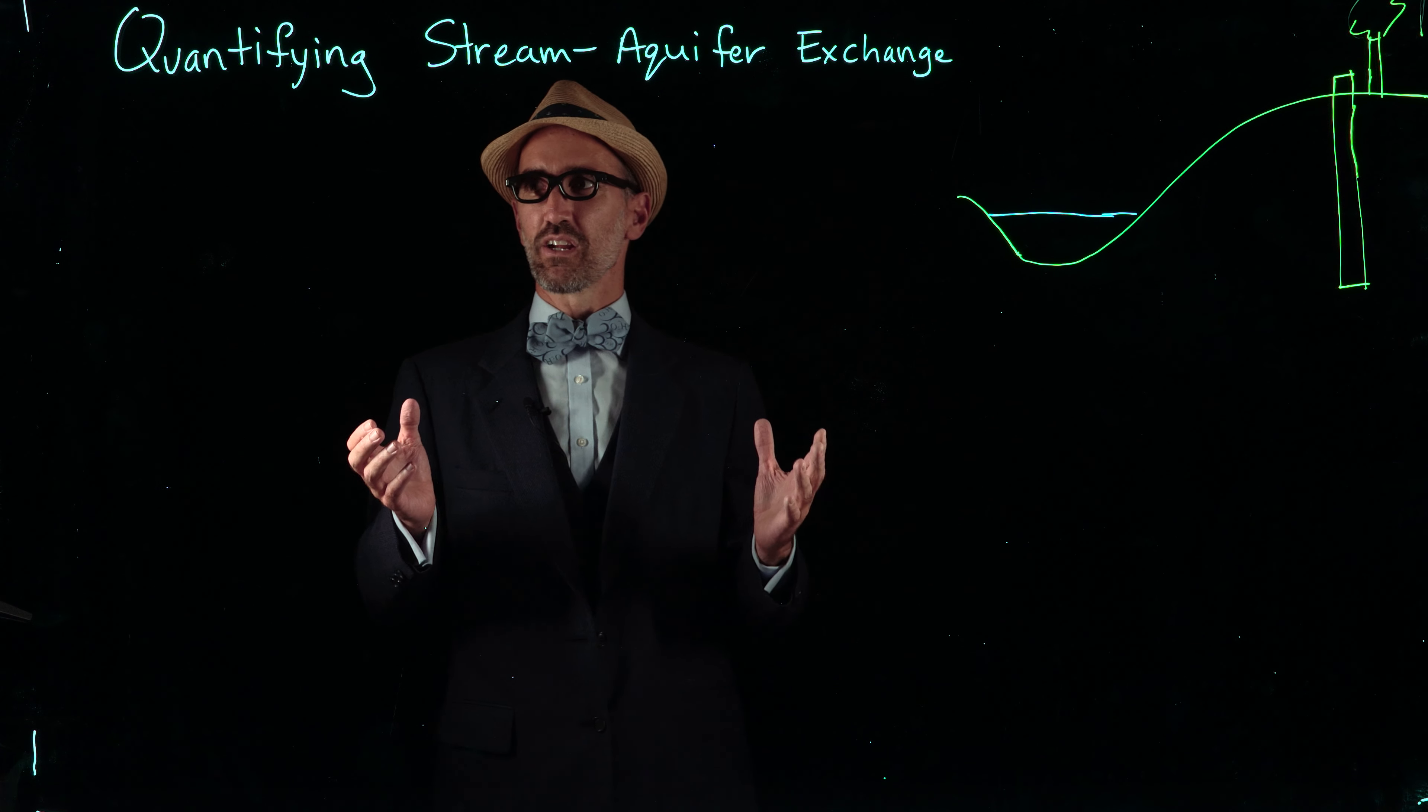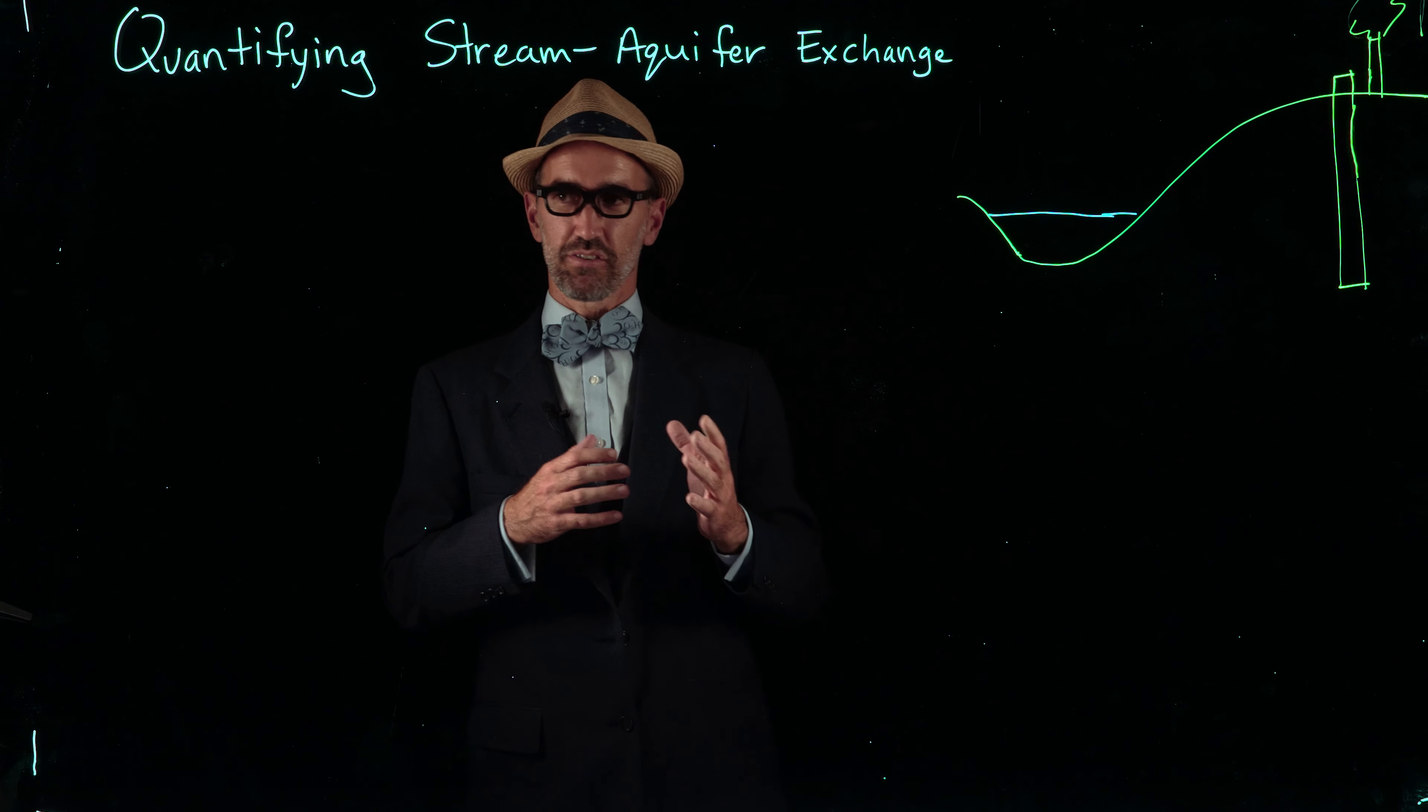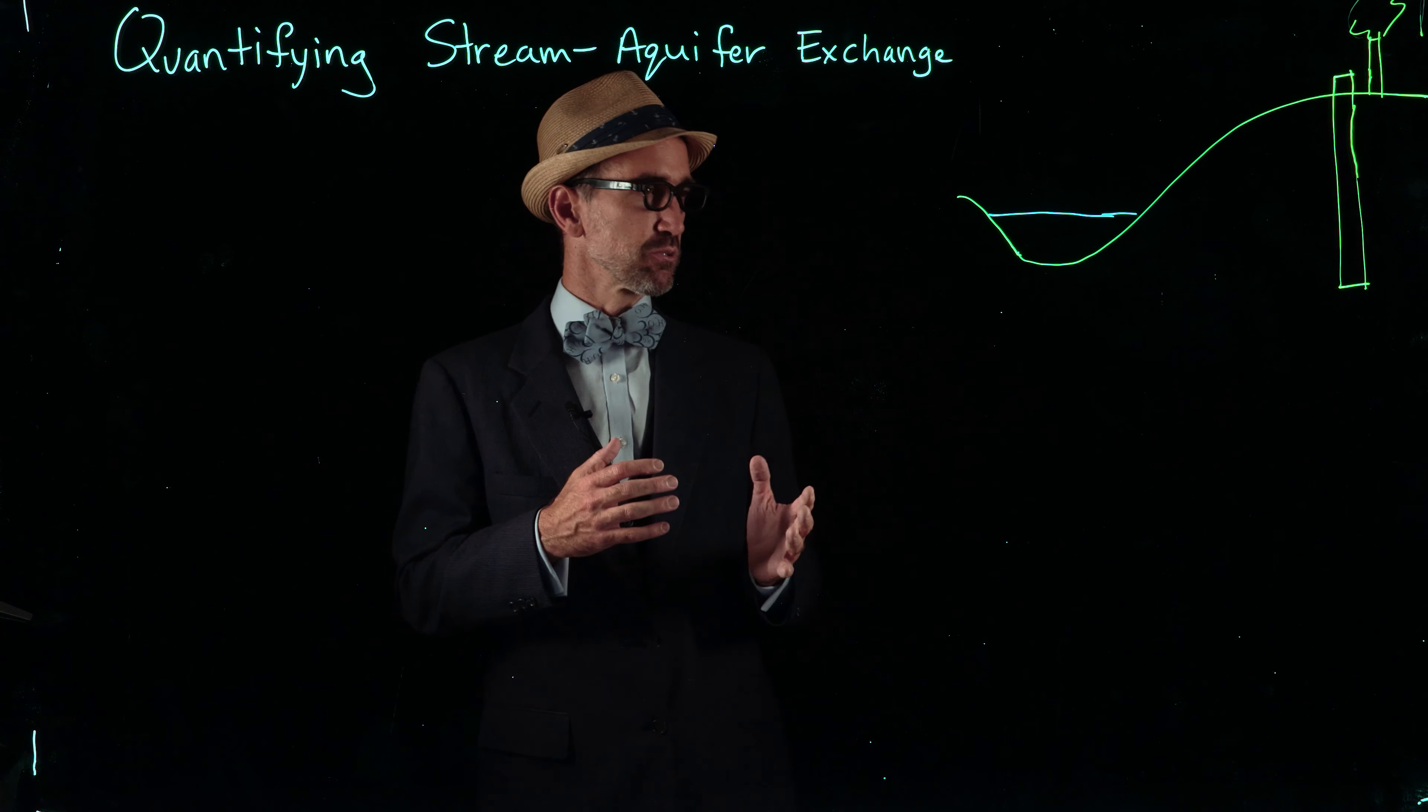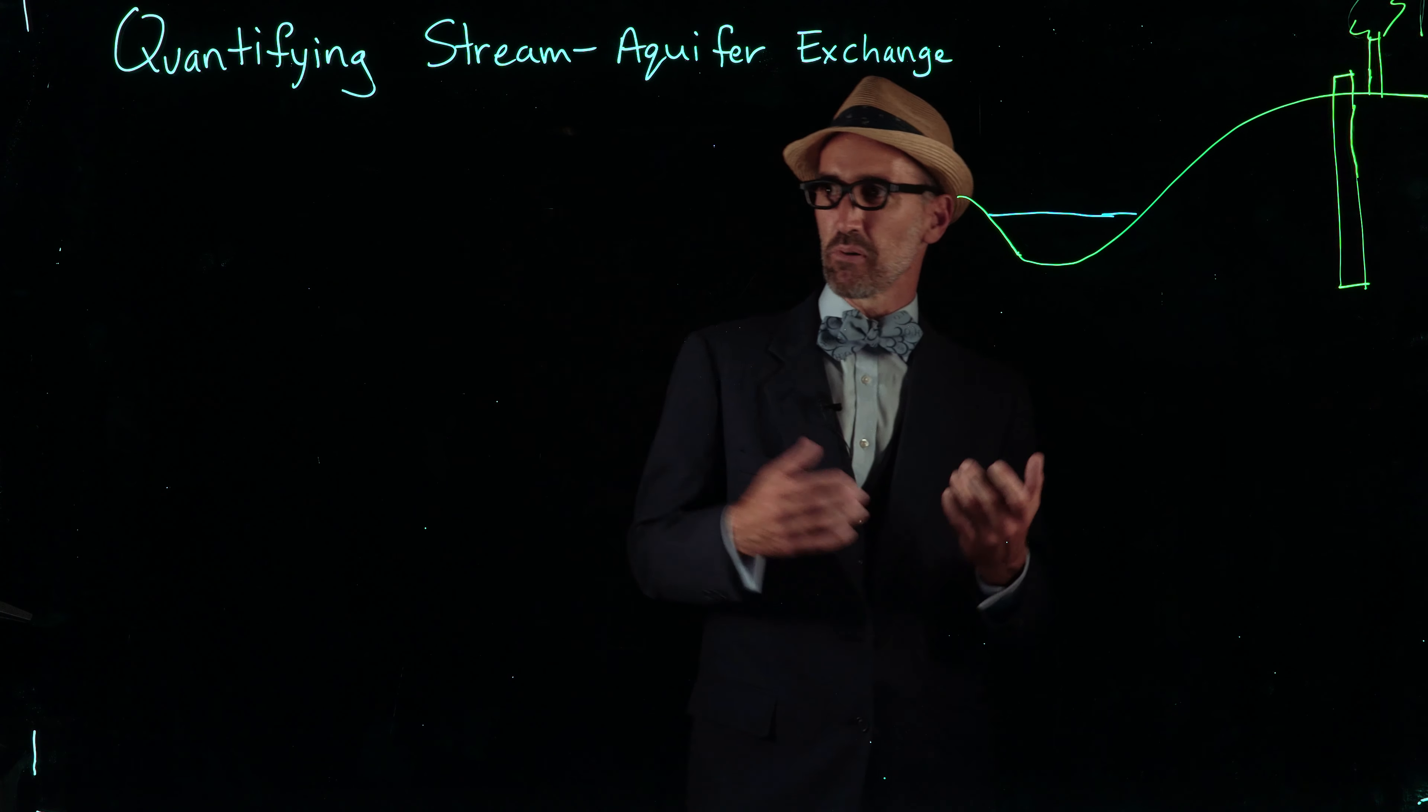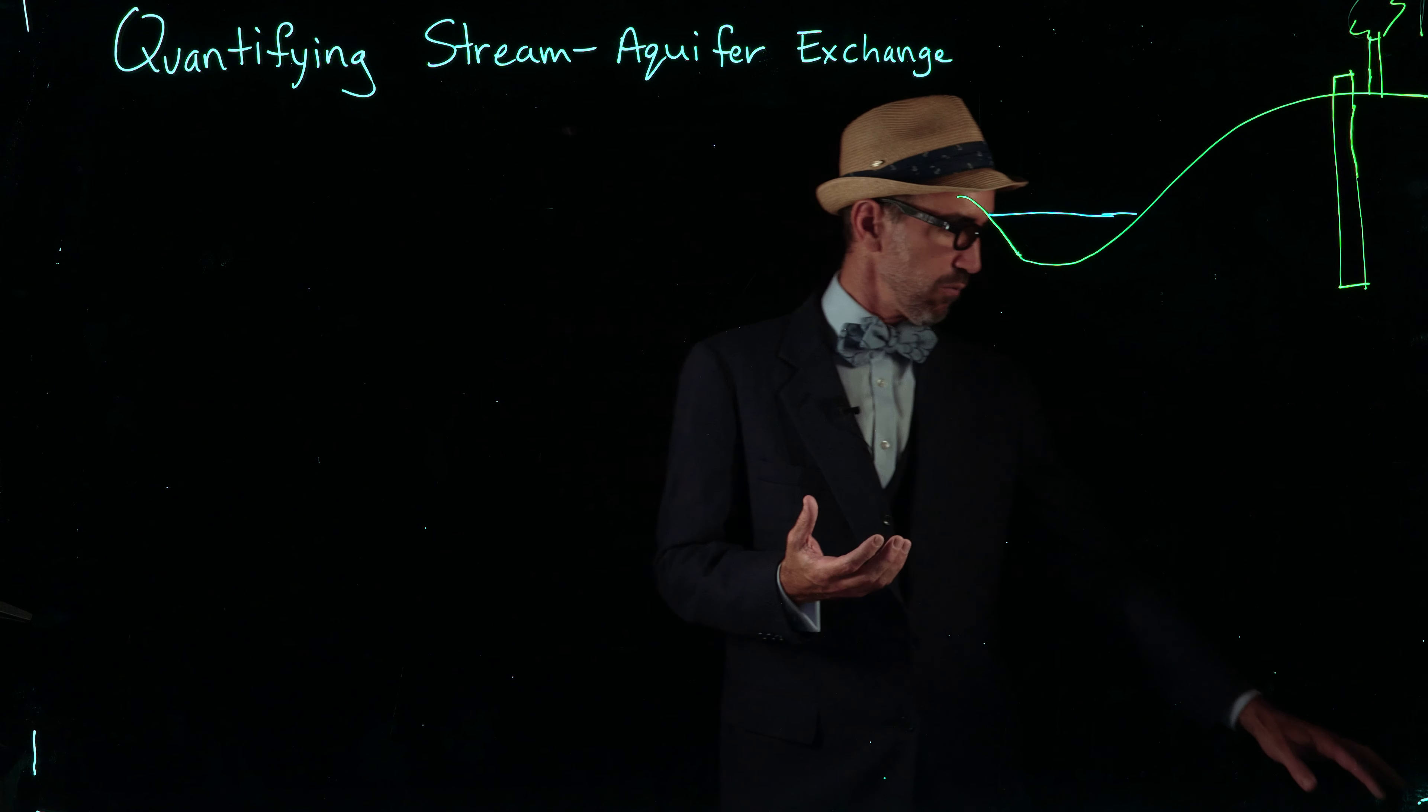In this video you're going to learn how to quantify stream-aquifer exchange, the movement of groundwater and surface water between an aquifer and a stream. We're going to use an example from the beautiful Gallatin River in Montana, a popular fly fishing river.